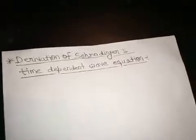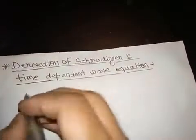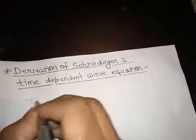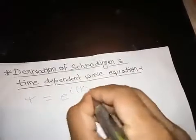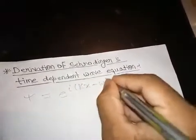We know that the general function of ψ equals exponential i(kx minus ωt).